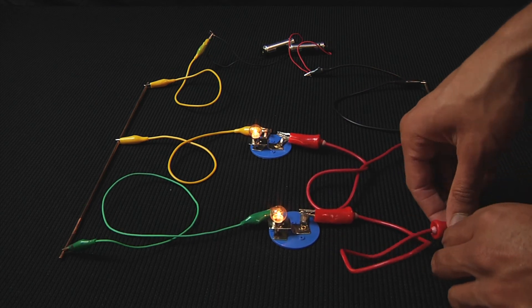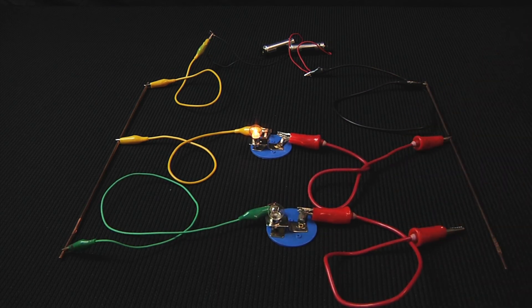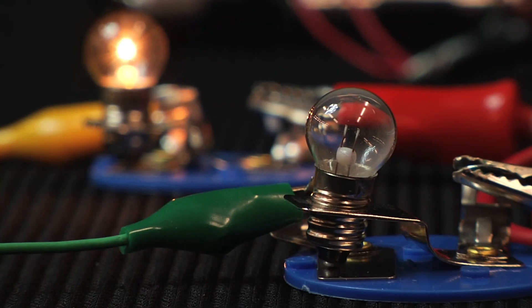Unlike a series circuit, if one of the branches is broken, the entire circuit will not be interrupted, so if one bulb were to go out, the rest would still be able to draw power.